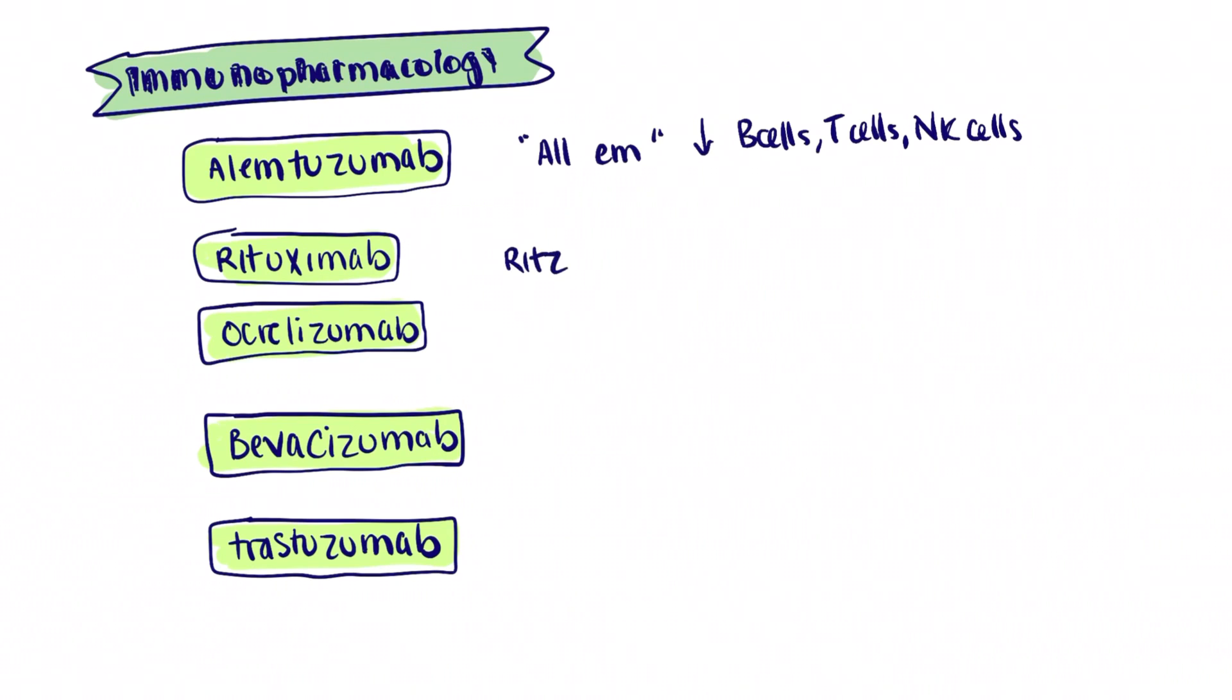The next two, I use Ritz and Oreos to remember Rituximab and Ocrelizumab. Because if you were to eat as many as you wanted, you probably gained 20 pounds. The serving size is like two crackers. 20 reminds you of CD20, which is on B cells.